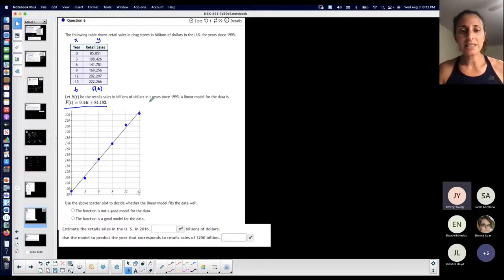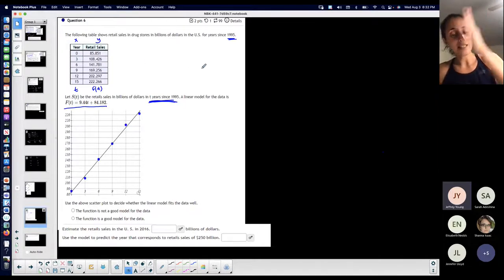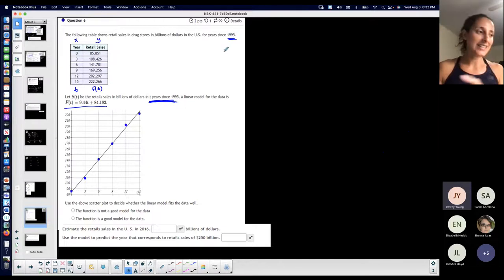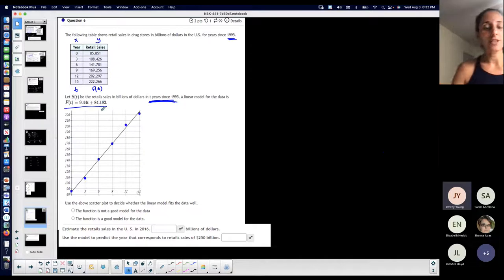Now, remember that T is years since 1995. So when T is 0, we're talking about 1995. If T was 1, then that's 1 year since 1995, that's 1996. Right? If T were 2, that's 2 years past 1995, that's 1997.